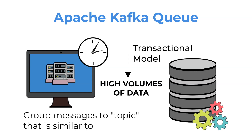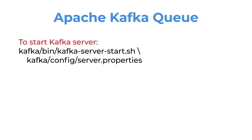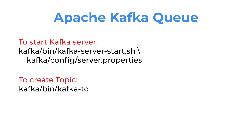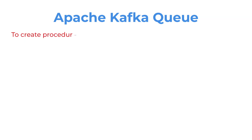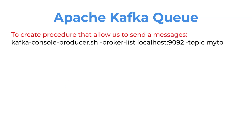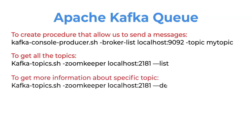Kafka groups messages into topics. Here are some examples of commands: to start the Kafka server, to create a topic, to create a producer that allows us to send messages, to get all the topics, to get more information about a specific topic, and to get all messages from a topic.